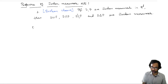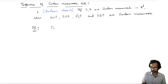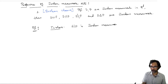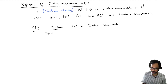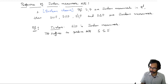Let me just prove one of them to illustrate the use of our equivalent conditions from the previous theorem. I will only prove that E minus F is Jordan measurable.